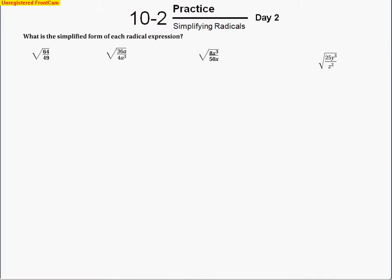This is a lesson for the second day of chapter 10, section 2, titled Simplifying Radicals. What we're going to see today is that we'll have fractions underneath the radical signs, or we might have two radical signs with a fraction. Let's take a look at the first problem: what is the simplified form of each radical expression.